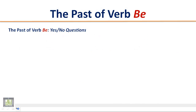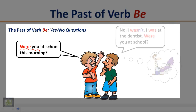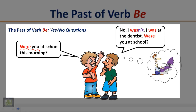The past form of verb B — yes/no questions. Listen to the following short conversations and pay attention to the word order in yes/no questions. 'Were you at school this morning?' 'No, I wasn't. I was at the dentist.' 'Were you at school?' 'Yes, I was.'